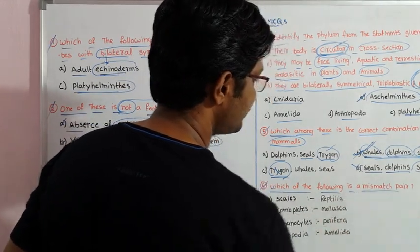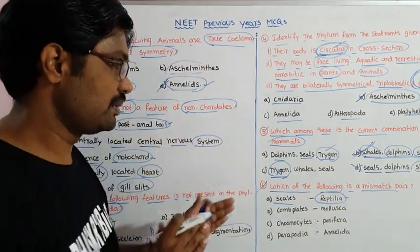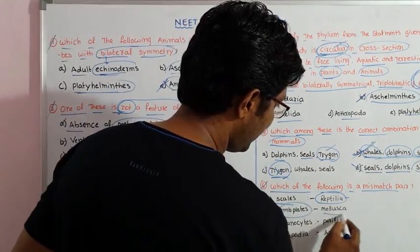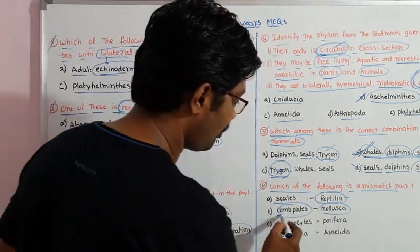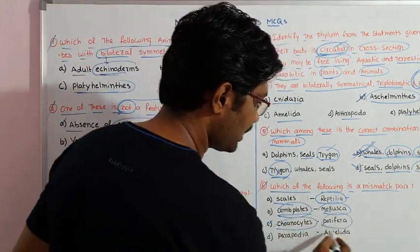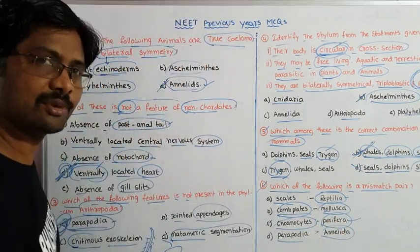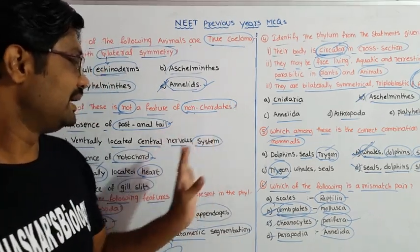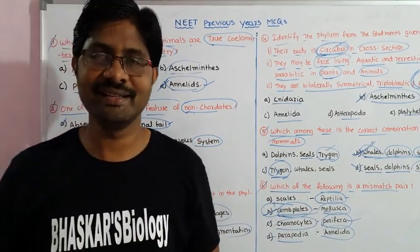Next question: Which of the following is a mismatched pair? Scales and reptiles — snakes have scales and are reptiles, so this is a correct match. Comb plates and Mollusca — comb plates are found in Ctenophora, not Mollusca, so this is the mismatched pair. Cnidocytes and Porifera — we examine this option too. The answer is comb plates with Mollusca, which is the mismatched pair. In this video we discussed six questions. Thank you very much.